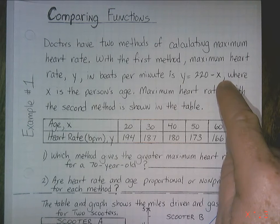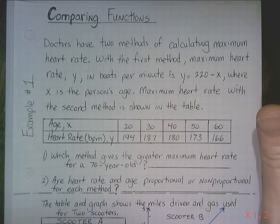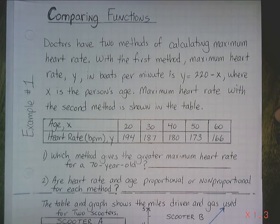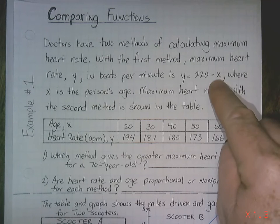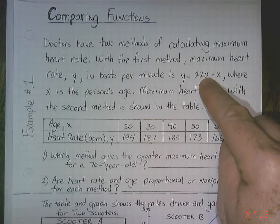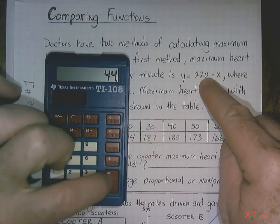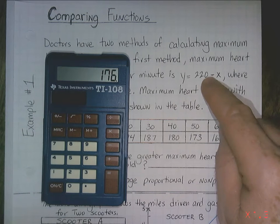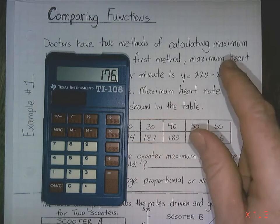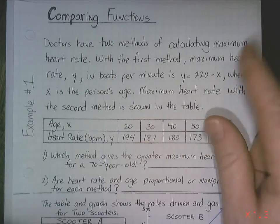So what they do is, the first one is, they just simply take 220, they subtract the person's age from 220, and that's going to be the heart rate. For example, I'm 44, so for me, it'd be 220 minus 44 is 176. So my maximum heart rate would be 176 beats per minute. So you just subtract your age.